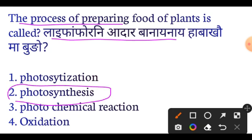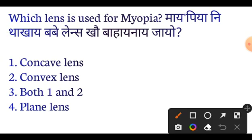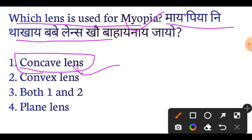Photosynthesis is the answer. The process by which plants prepare their food is called Photosynthesis — very important. Next question: Which lens is used for myopia? For myopia, a Concave lens is used.